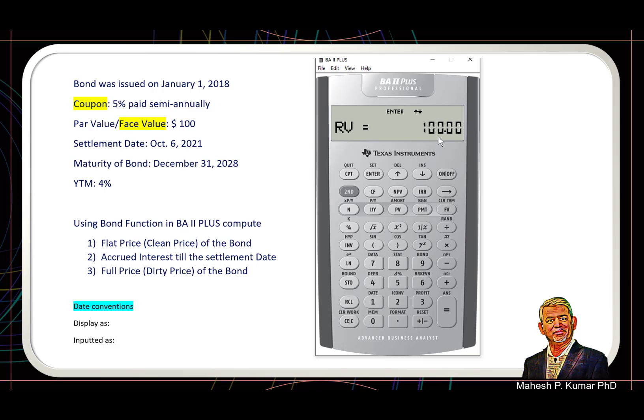So this is the redemption value—this is the par value of the bond. So this bond will be redeemed at $100. This stays as $100 in most of the cases, unless we are dealing with something like a callable bond which may be redeemed at $103 or something, at a premium. But this is a regular bond, so it will be redeemed at $100 as specified in the question.